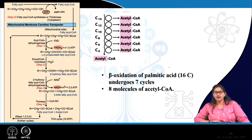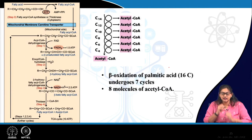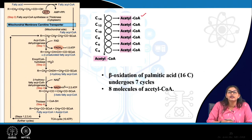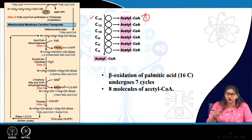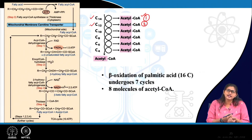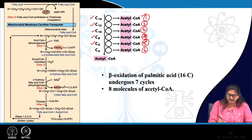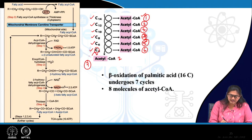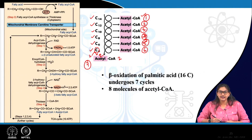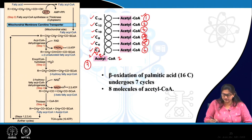For palmitic acid — a 16-carbon compound — after cycle 1: acetyl CoA released, C14 myristoyl CoA formed; cycle 2: acetyl CoA, C12 lauroyl CoA; cycle 3: C10; cycle 4: C8; cycle 5: C6; cycle 6: C4; and in the 7th cycle, 2 acetyl coenzyme A are released from the C4 compound. So there are 7 cycles of beta oxidation for palmitic acid, producing 8 molecules of acetyl coenzyme A.